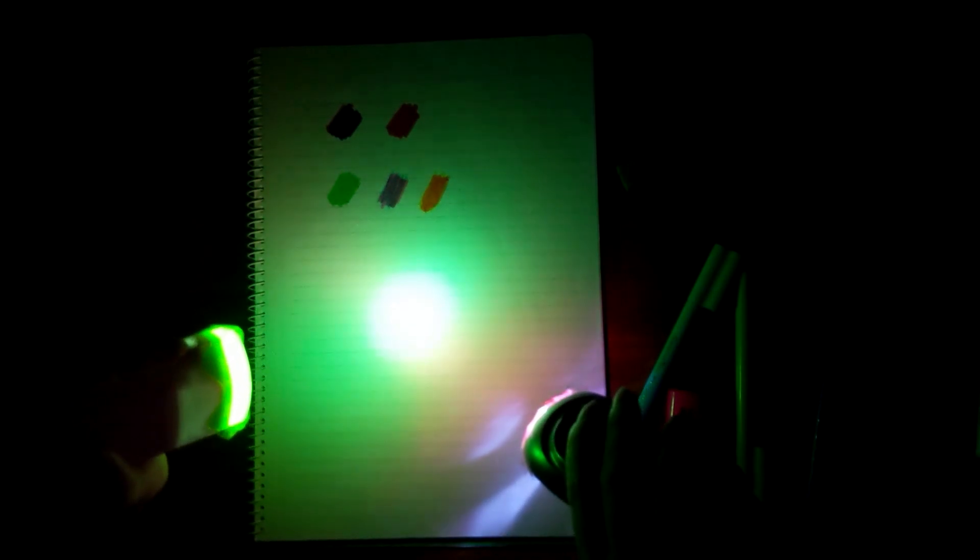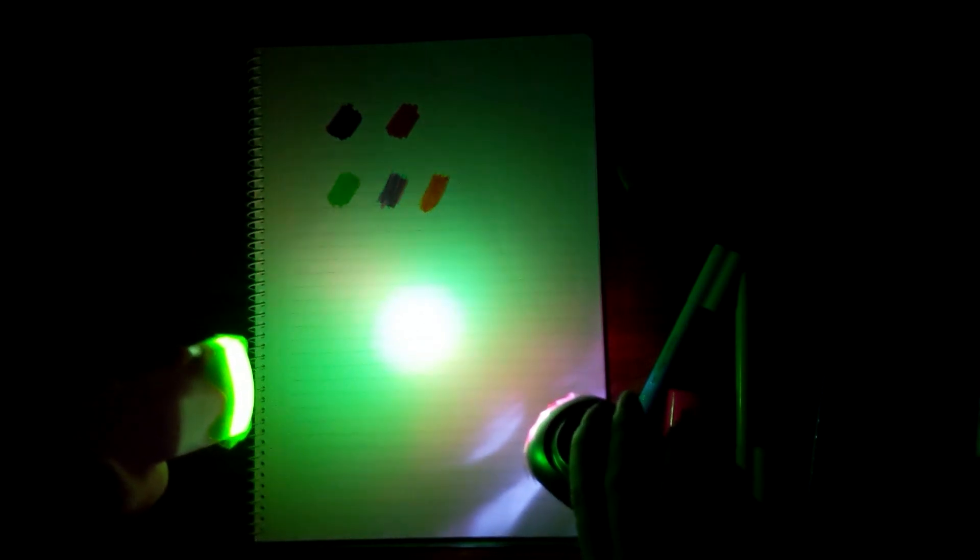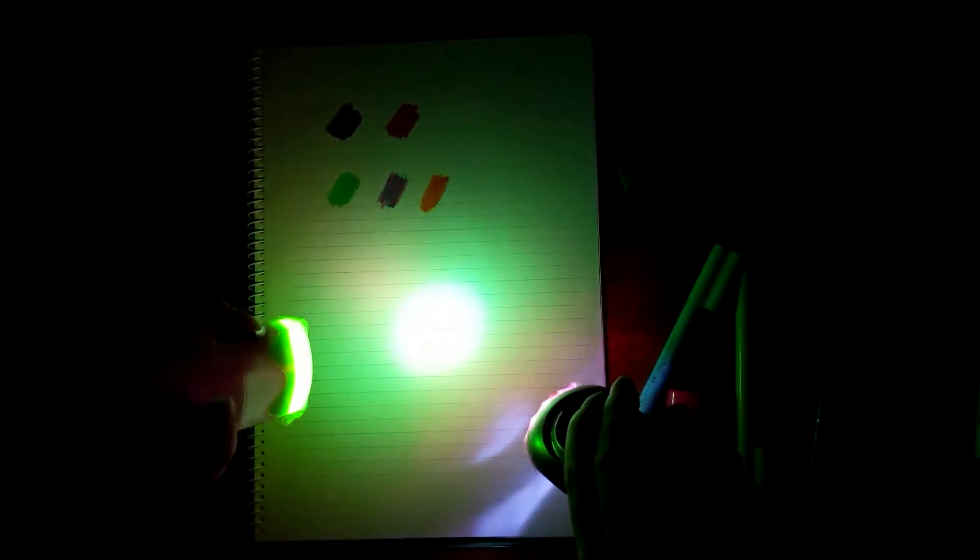So this is additive colour mixing, where you start with nothing and you add a light source to it. The more lights you add, the brighter it's going to get. And the primary colours here are red, green and blue.